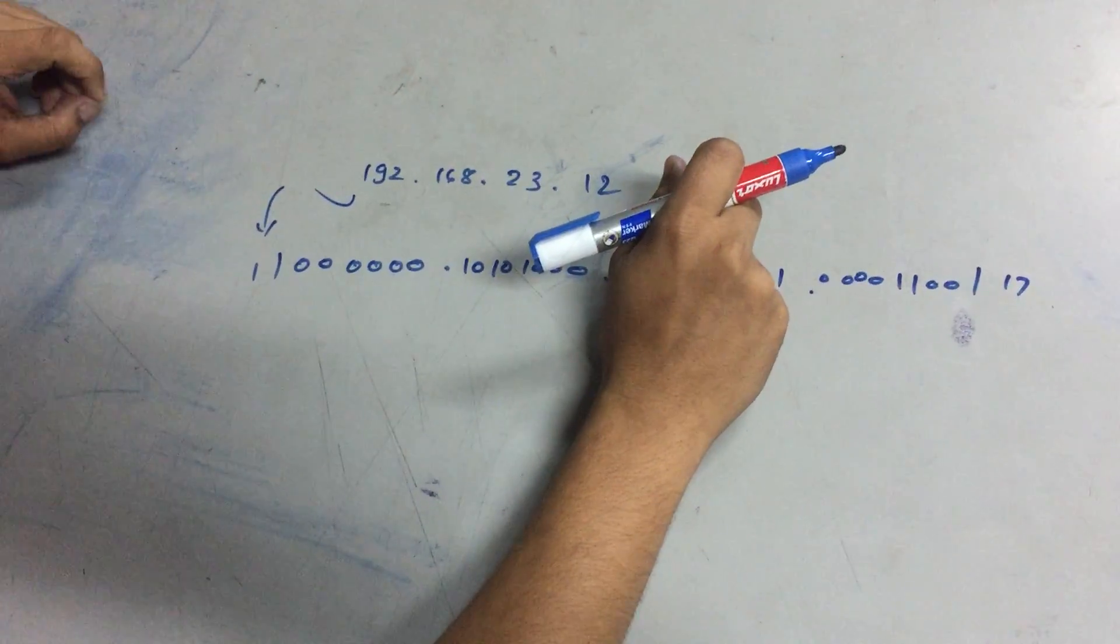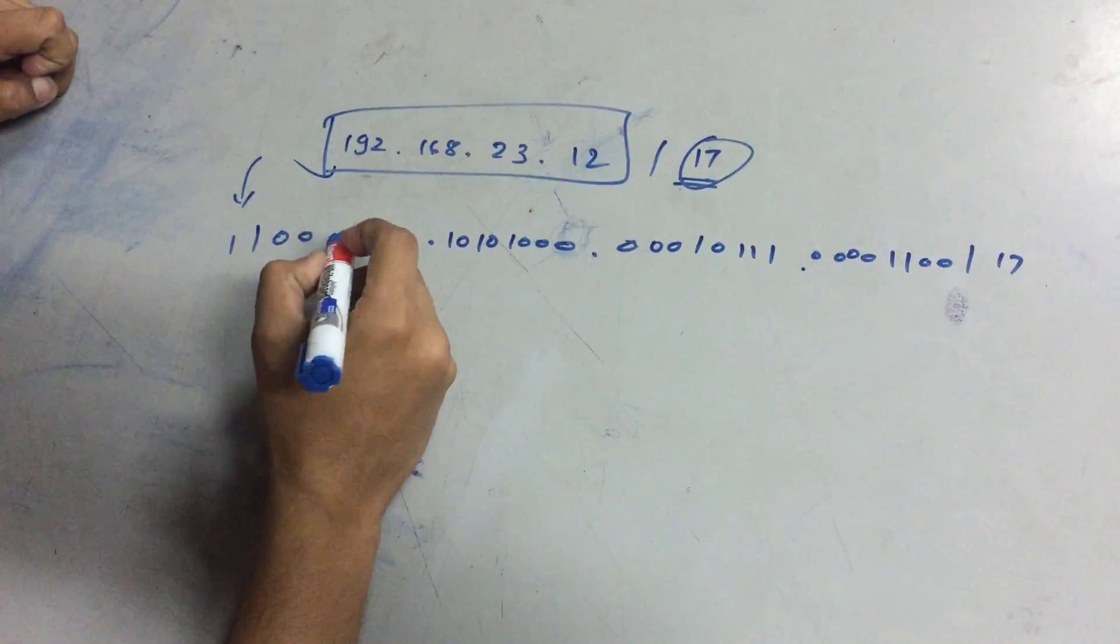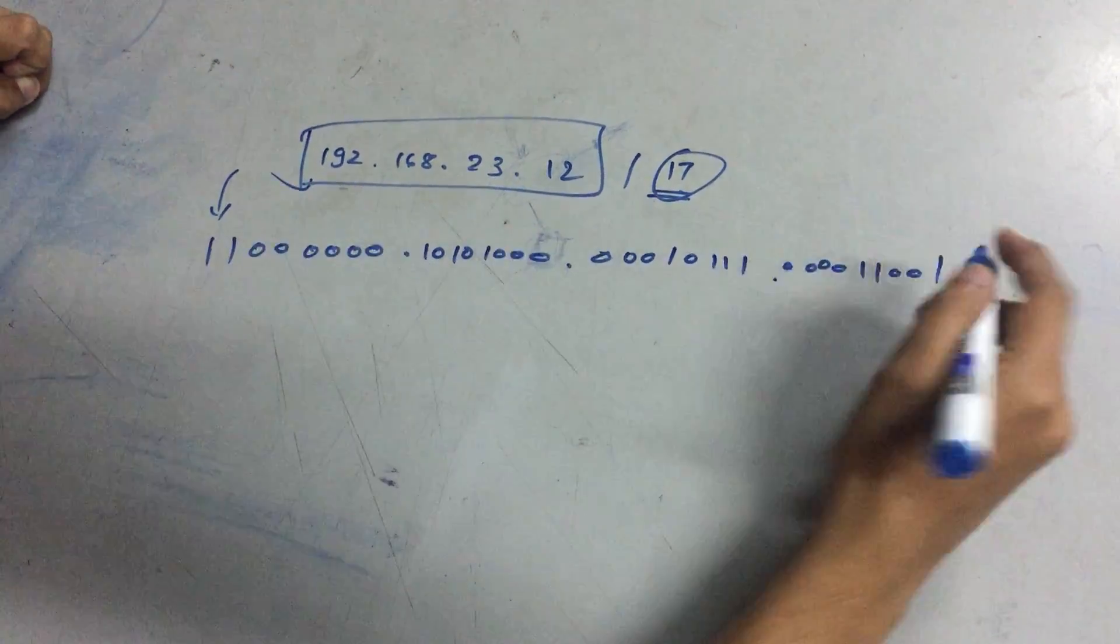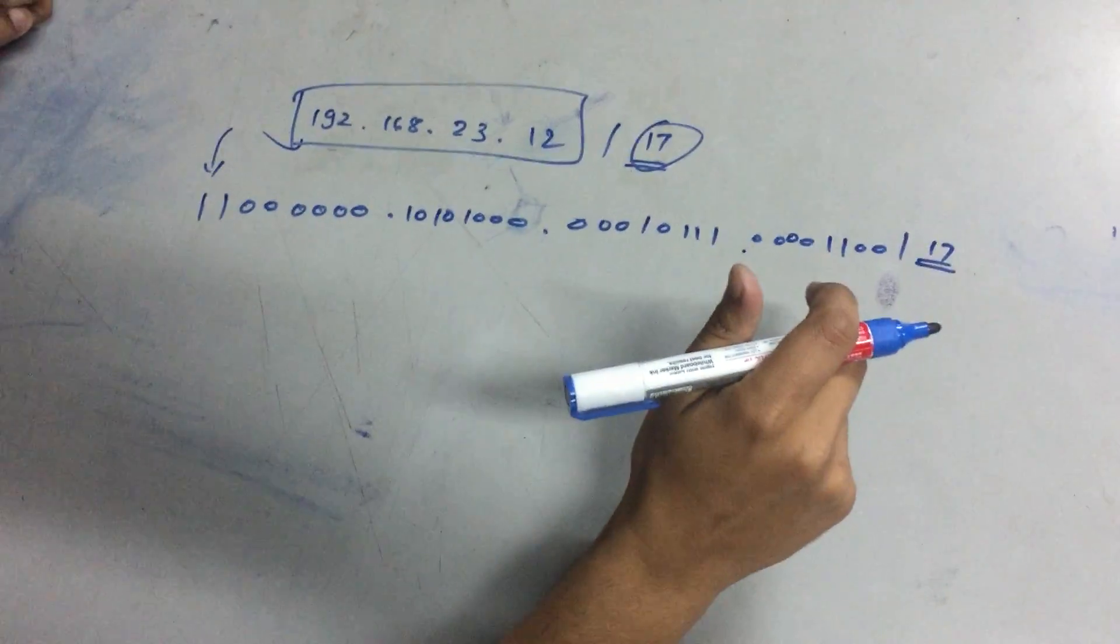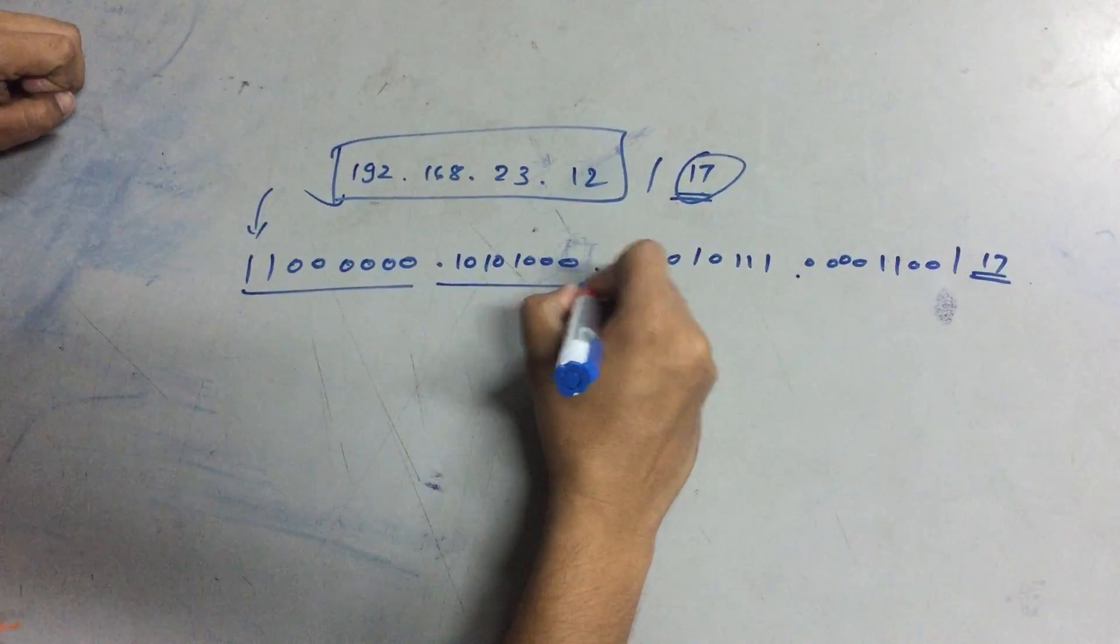The first thing you are going to do is convert this IP address to binary. I have already converted the IP address to binary form. We have 17 bits as the network bit.